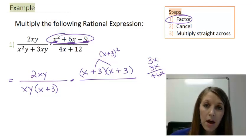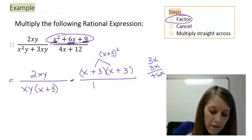In the bottom, I have two terms, but I always start with common factor. And it looks like I have a common factor of 4. If I take that out, I'm left with x plus 3.